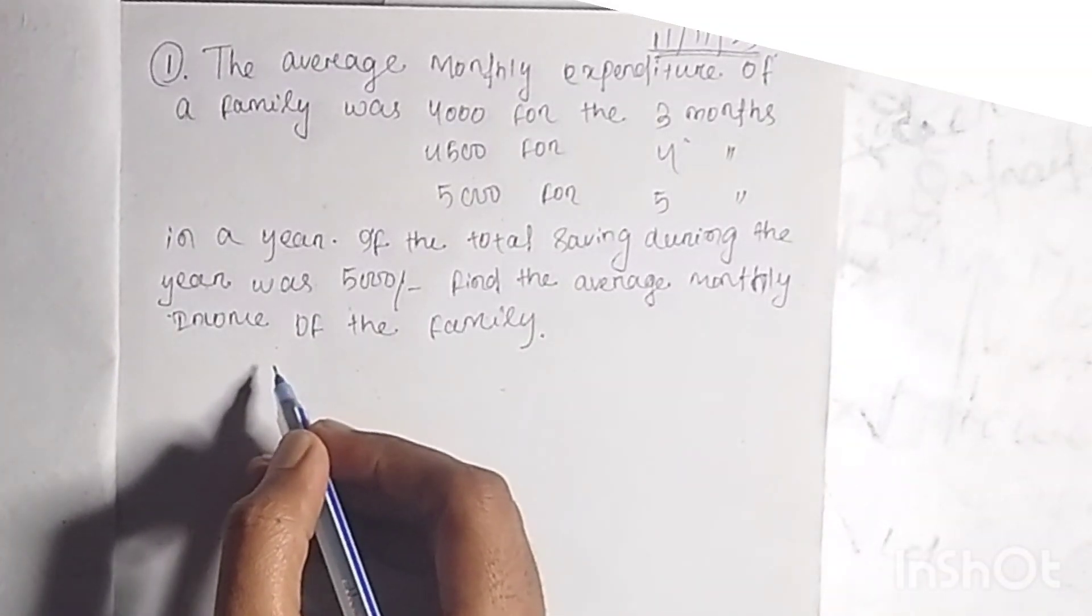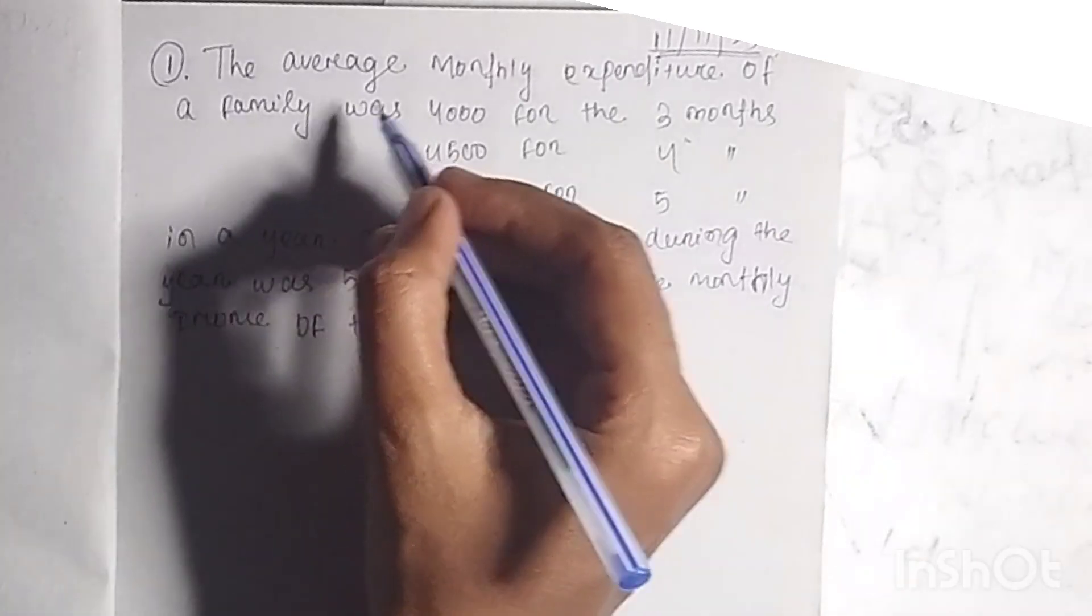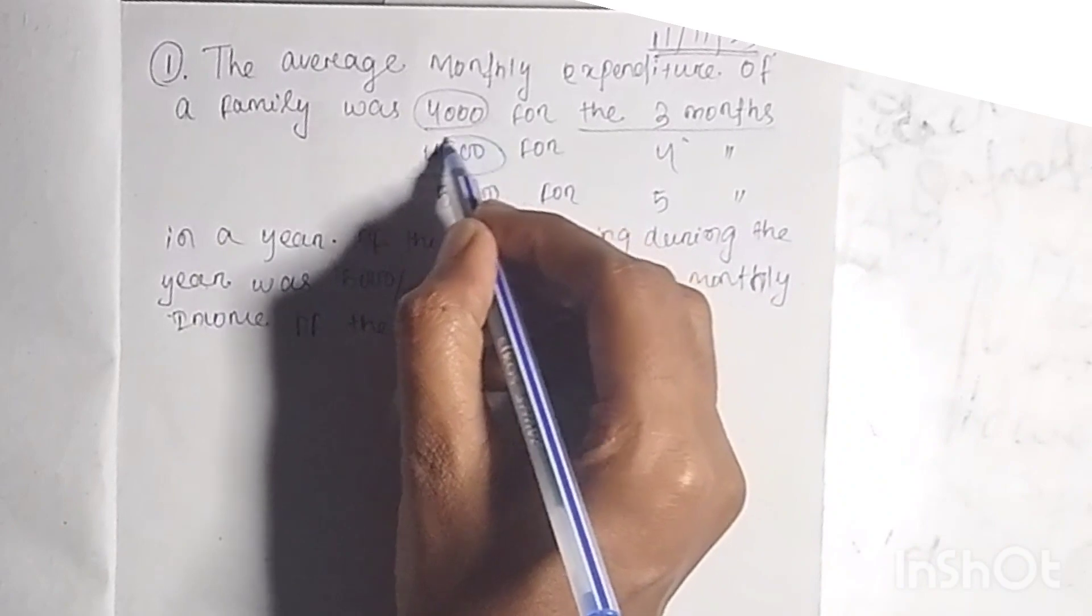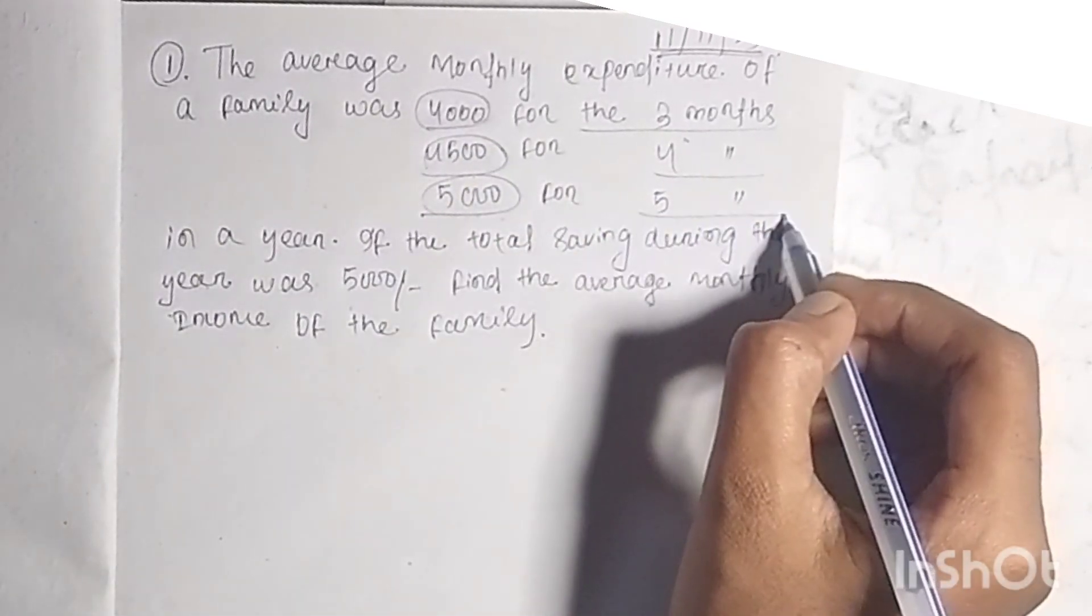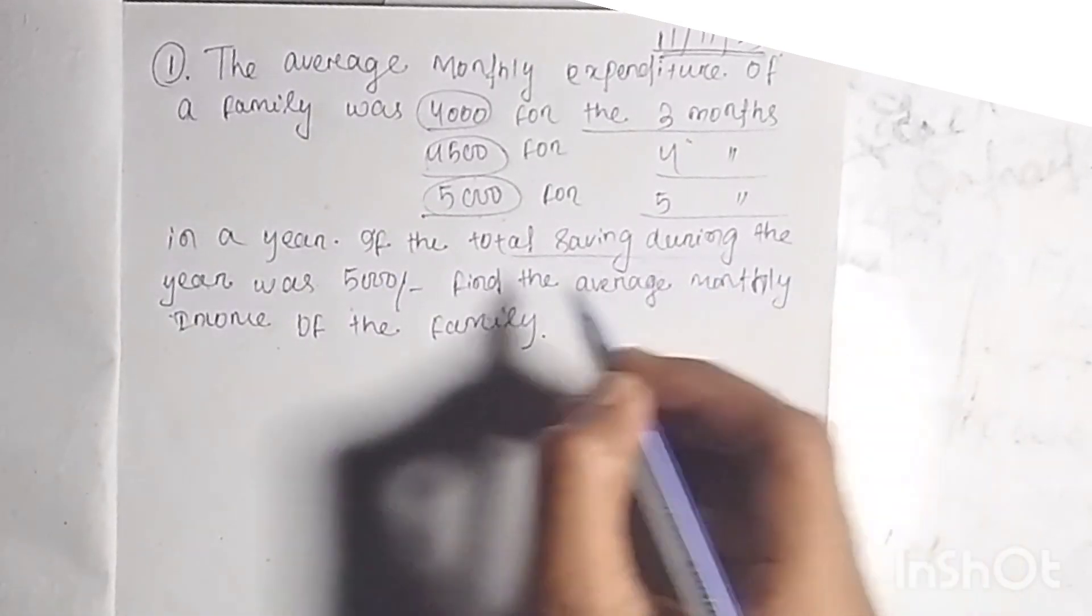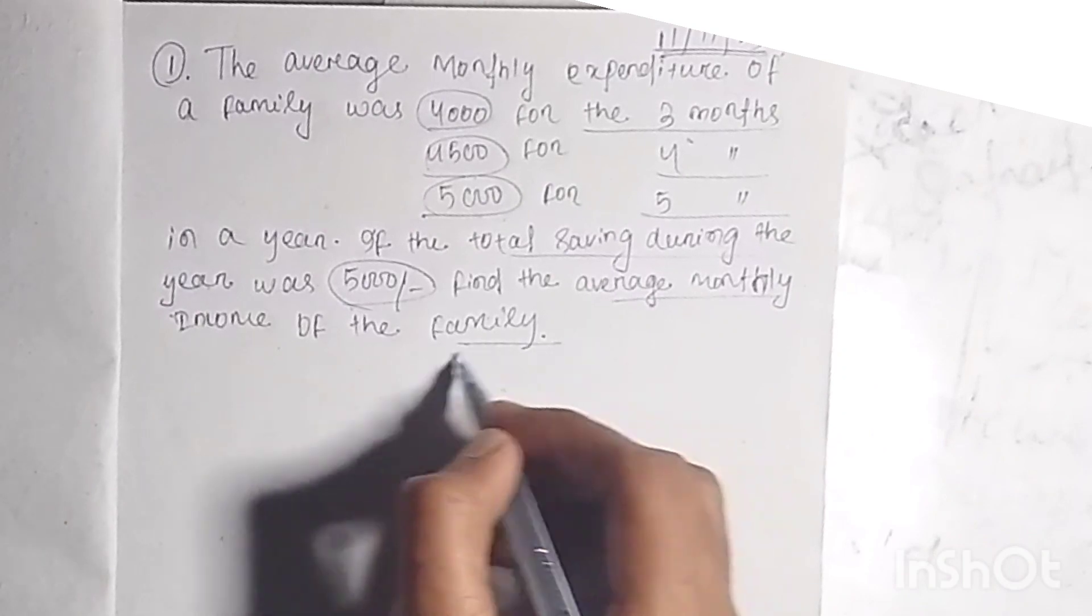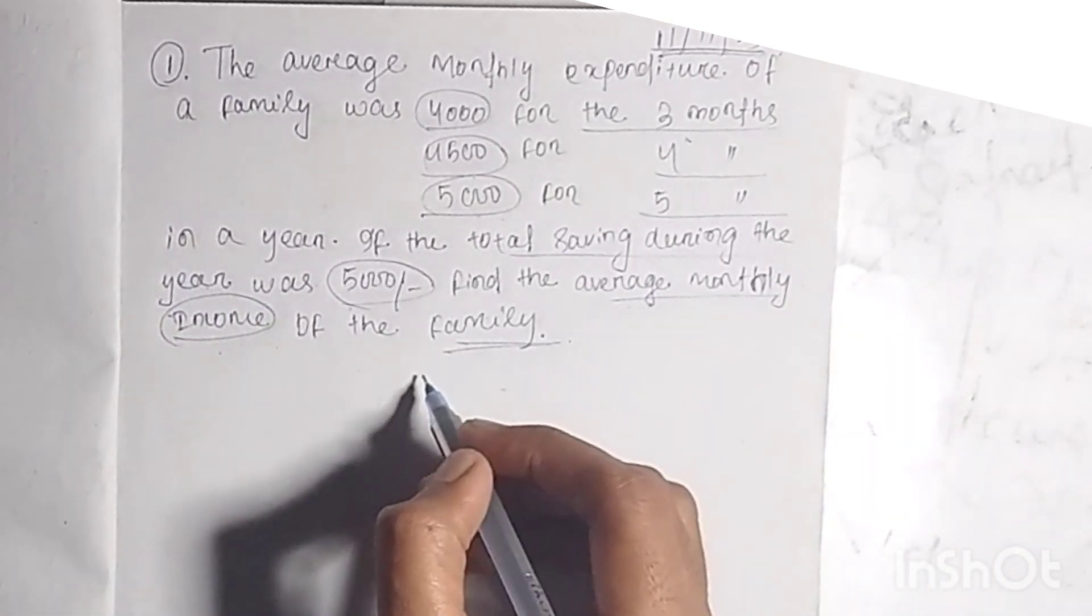Here is a question from UGC NET Paper 1, a math question. Let's solve it. The average monthly expenditure of a family was 4,000 for three months, 4,500 for four months, and 5,000 for five months in a year. If the total saving during the year was 5,000, find the average monthly income of the family.